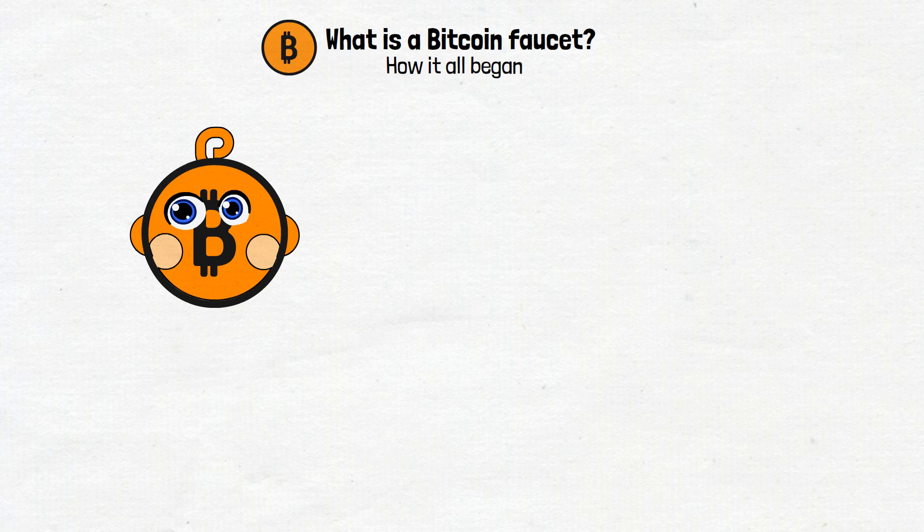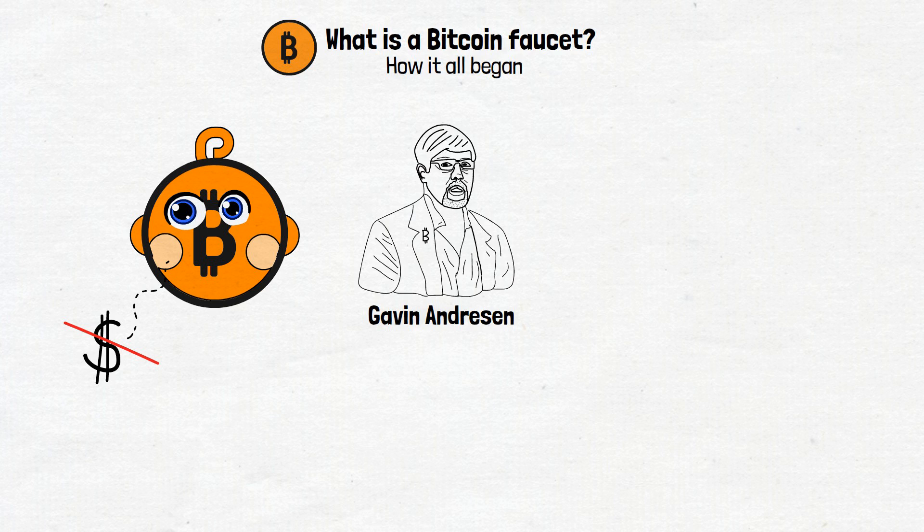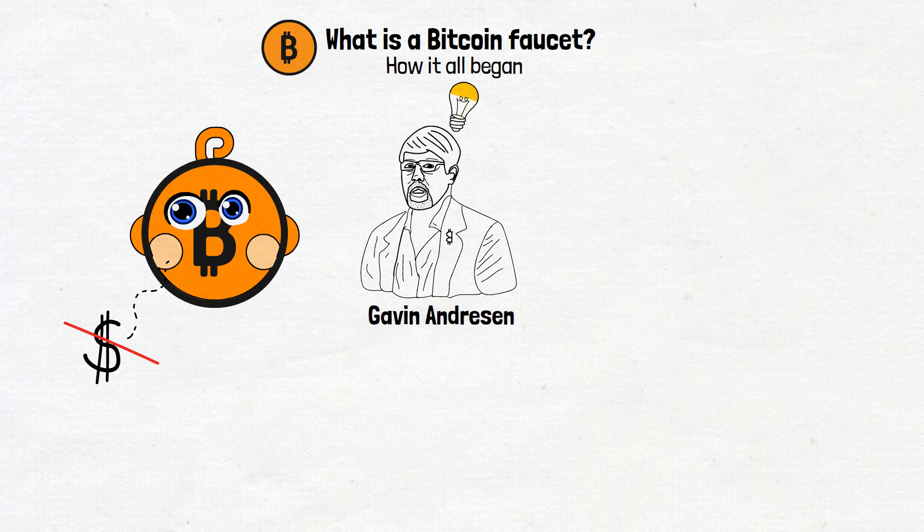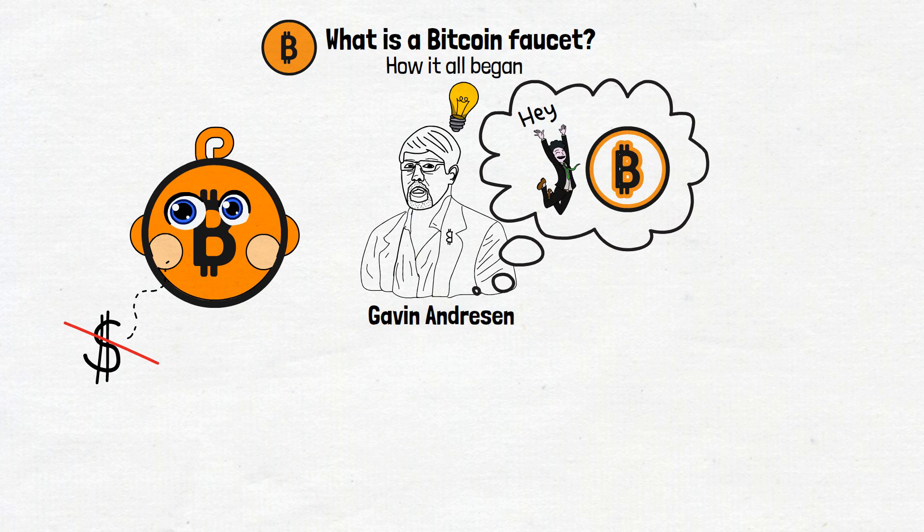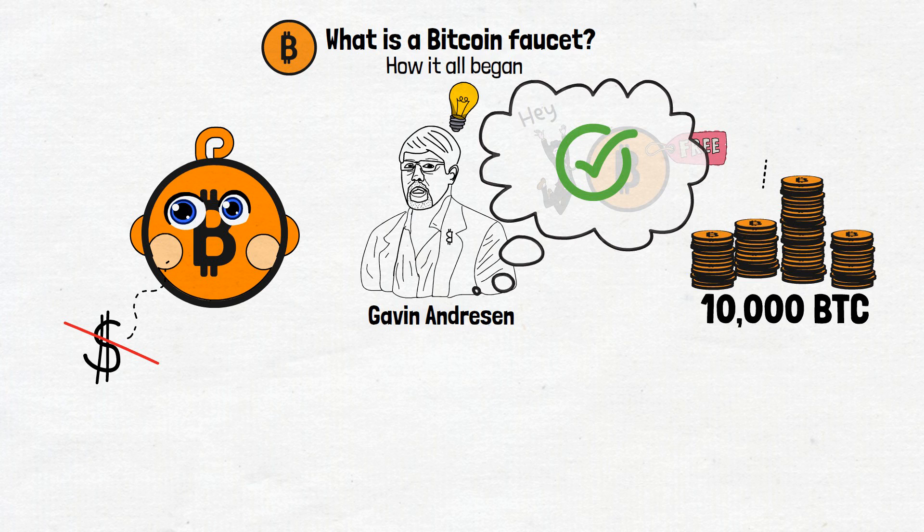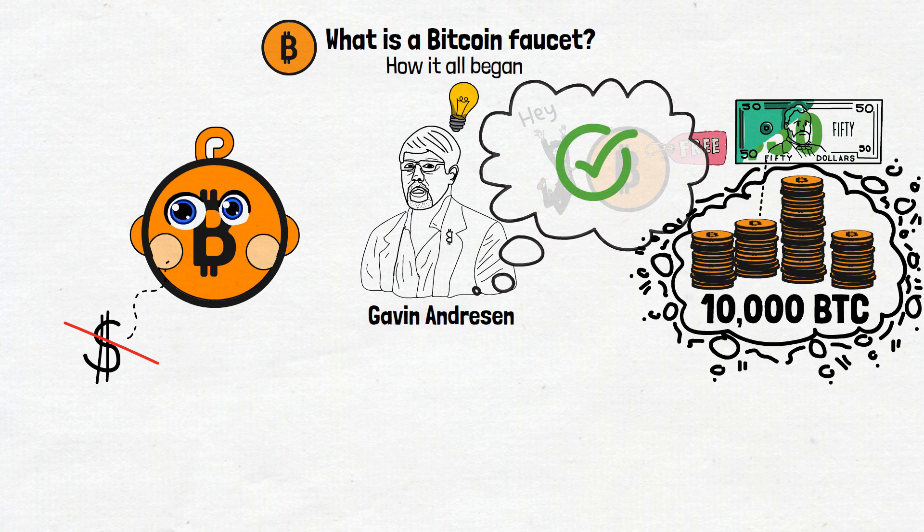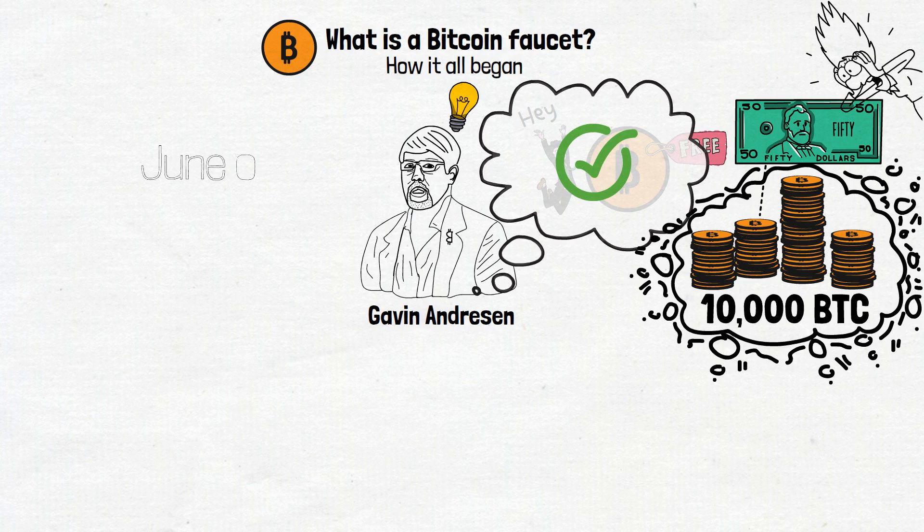Now, let's get back to Bitcoin to understand what is a Bitcoin faucet and how it all began. In the early days of BTC, when it had little to no tangible value, a man named Gavin Andresen saw the potential of the project and came up with a brilliant idea. He thought, hey, wouldn't it be awesome if we could introduce people to Bitcoin by giving them some for free? To turn that idea into reality, Andresen bought 10,000 BTC for 50 dollars. Yeah, 10,000 BTC for 50 bucks, you heard it right! Then, in June of 2010, he launched the world's first Bitcoin faucet website.